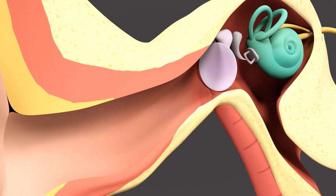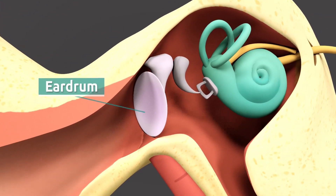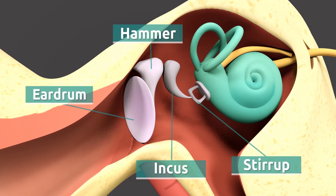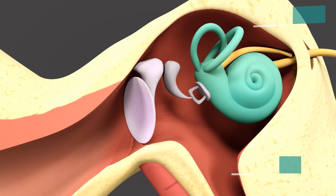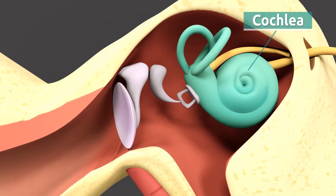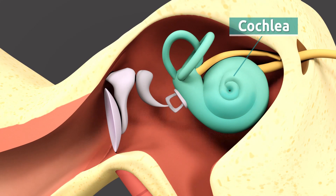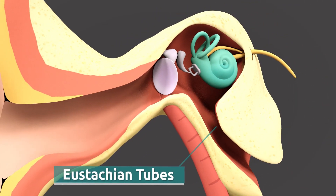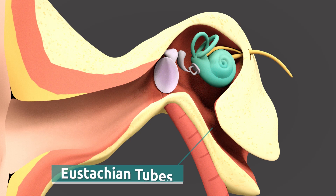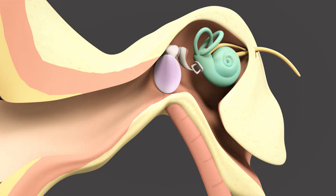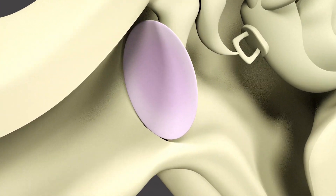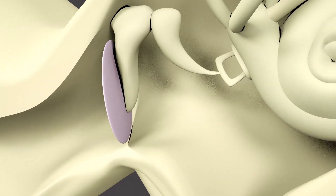The middle ear is made up of the eardrum and three bones: the hammer, the incus, and the stirrup. These transmit sounds to the cochlea. The Eustachian tubes are also located in the middle ear. The eardrum is a membrane similar to a drum head, located between the outer ear and the inner ear.